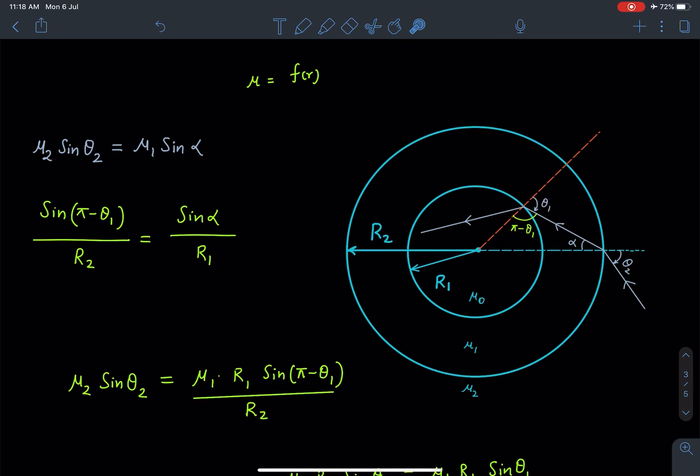After the first refraction, because there is a change in medium, the light ray is going to refract and change its path. It goes along some other path and then strikes the sphere of radius r₁. I am expressing both angles θ₁ and θ₂ from the radial lines.